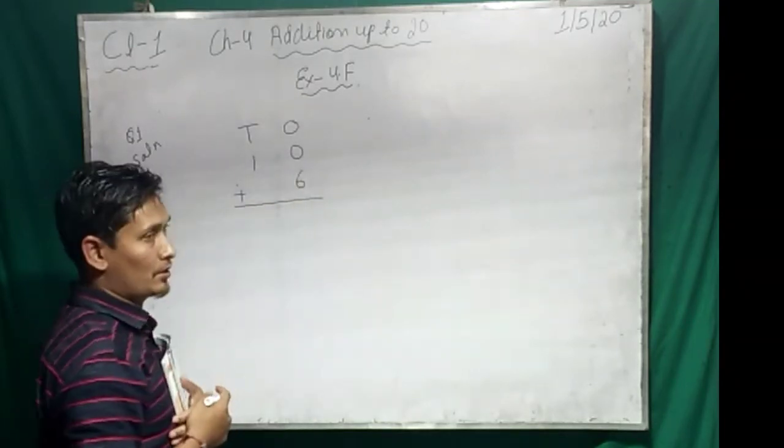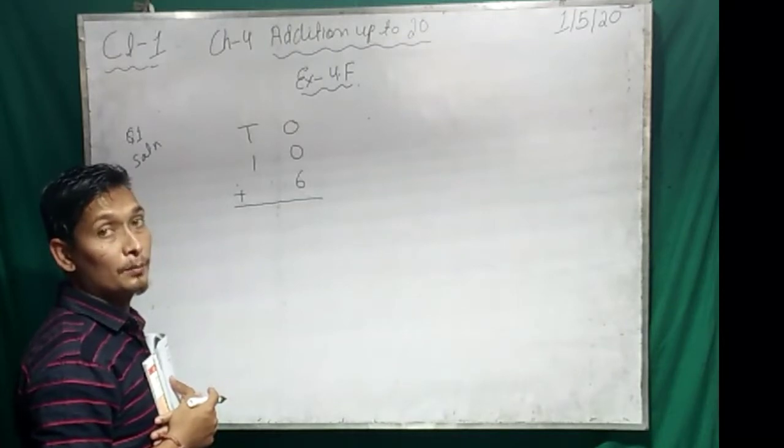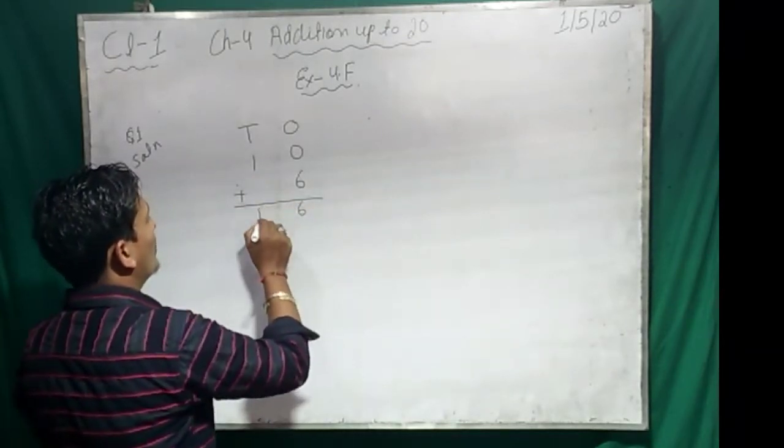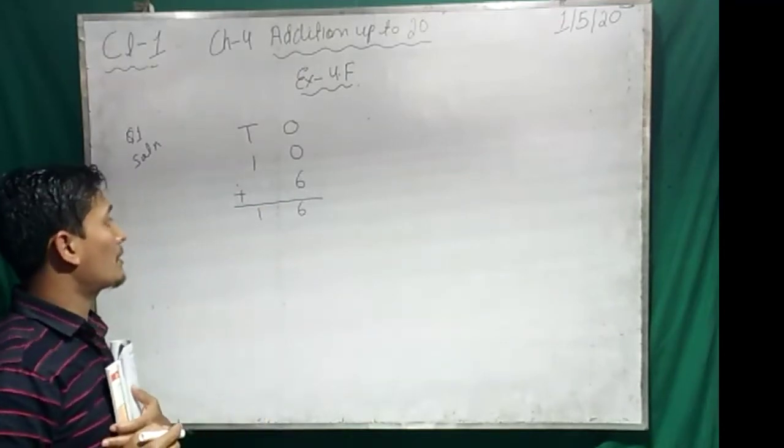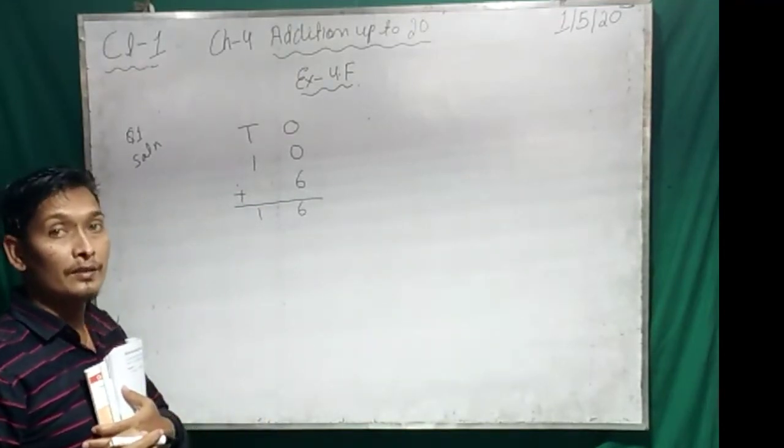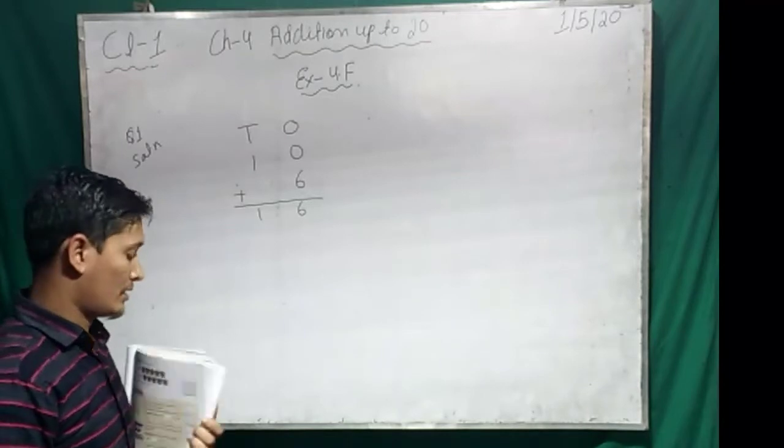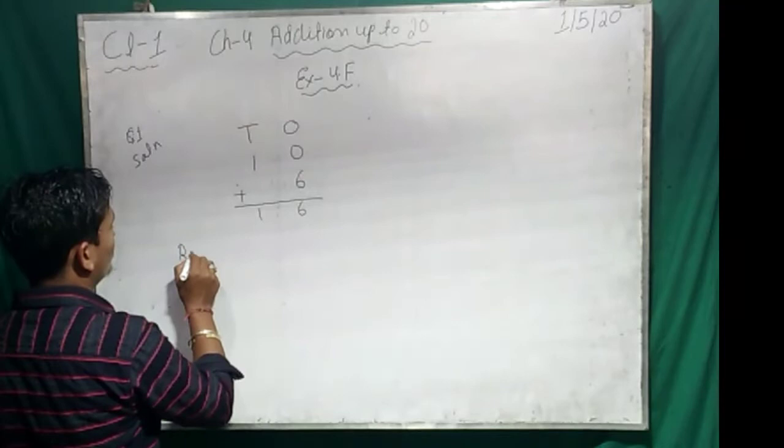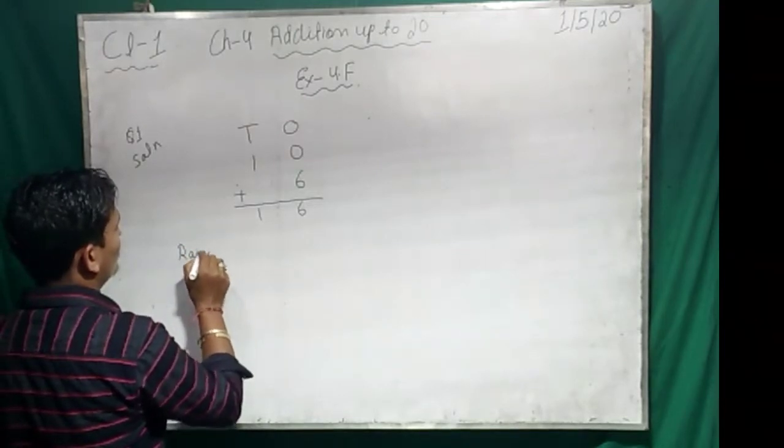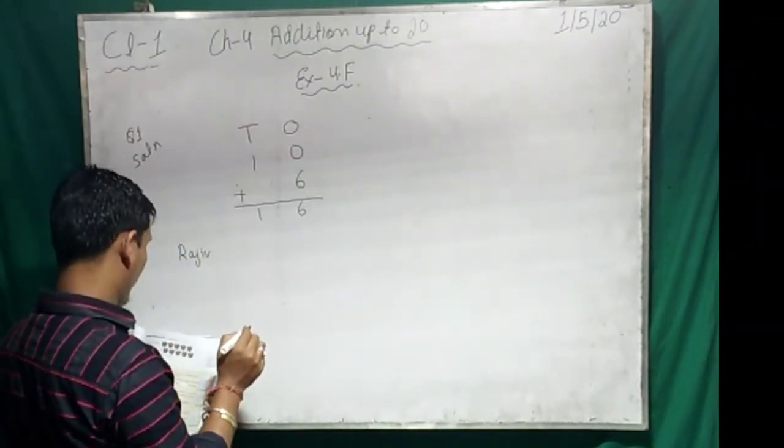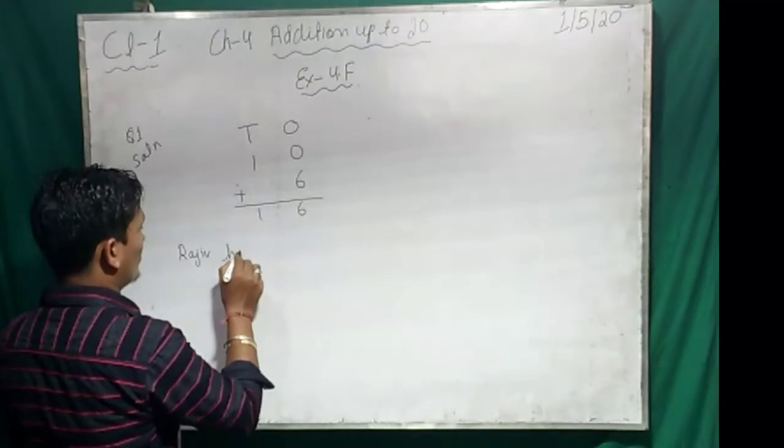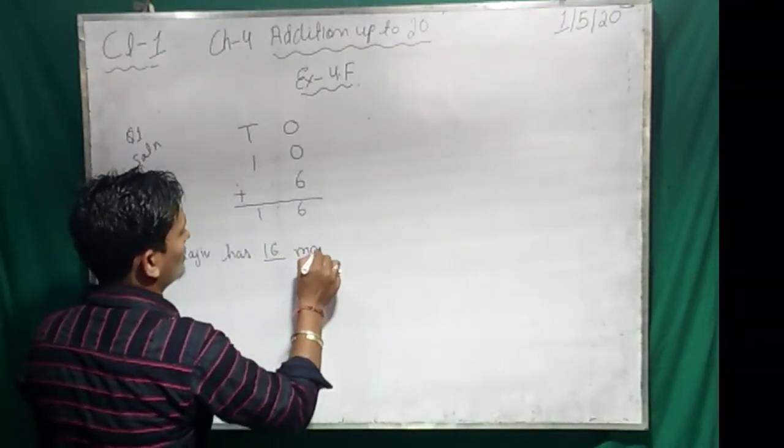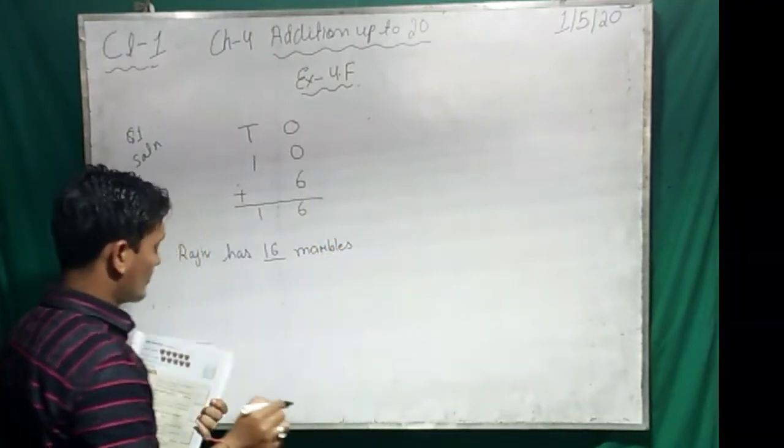So, six plus zero is how much? Six plus zero means six, and one. So what is the total number of marbles now? Now Rajiv has 16. Good. So Rajiv has 16 marbles now.